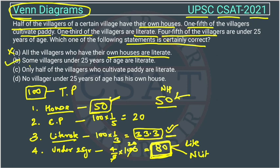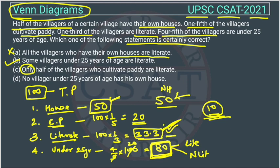Let's check option C: only half of the villagers who cultivate paddy are literate. How many are cultivating paddy? Only 20 people. Half of 20 will be 10, so the statement says these 10 are literate. We cannot confirm this because we have 33.3 people who are literate total. This statement is also wrong.